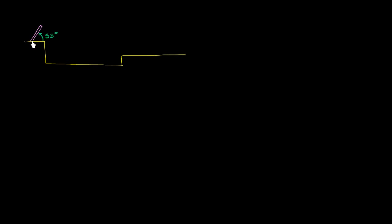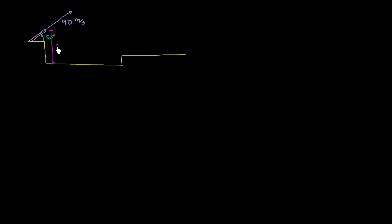It's coming out of the cannon at this angle right over here — 53 degrees. We are going to have it come out of the muzzle of the cannon with a velocity of 90 meters per second. Just to give ourselves a sense of the heights: from the muzzle of the cannon down to the lower platform is 25 meters, and the height of the landing platform is 9 meters.